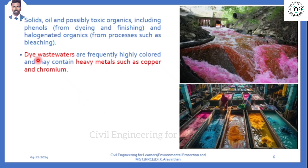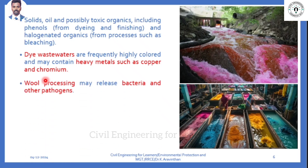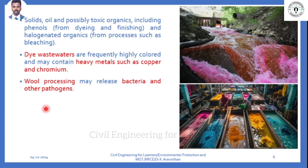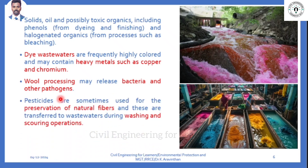The wash water contains heavy metals such as copper and chromium. Chromium is a hazardous waste and must be extracted before it is discharged into the river - a chromium extractor unit is required. Regarding wool processing: wool is a degradable material, and wood processing may release bacteria and other pathogens, which can be degraded.